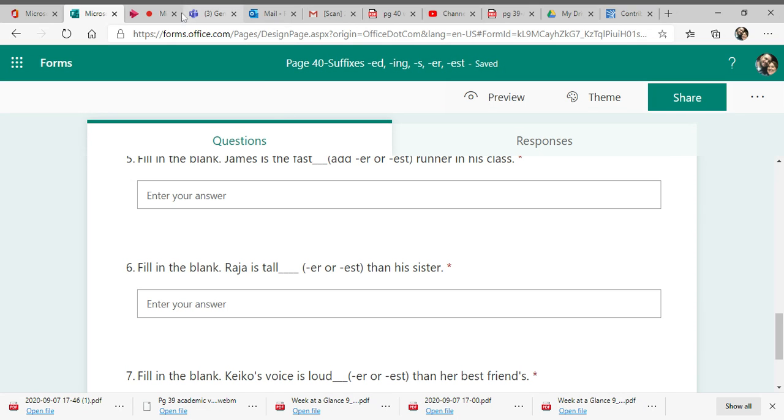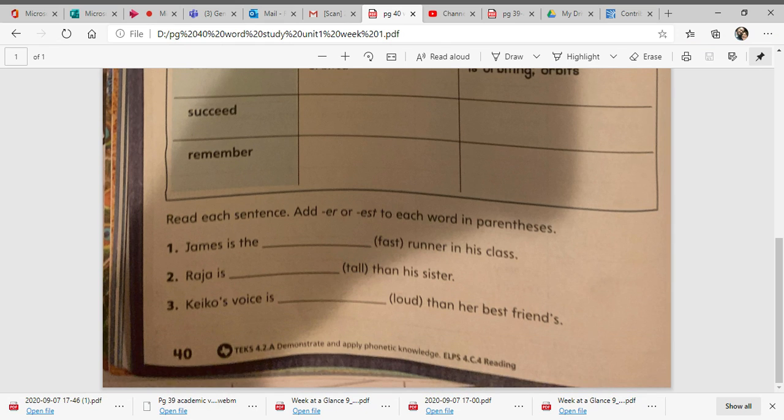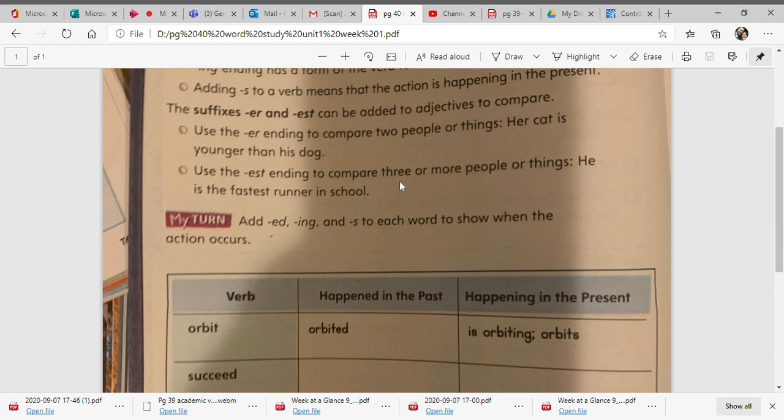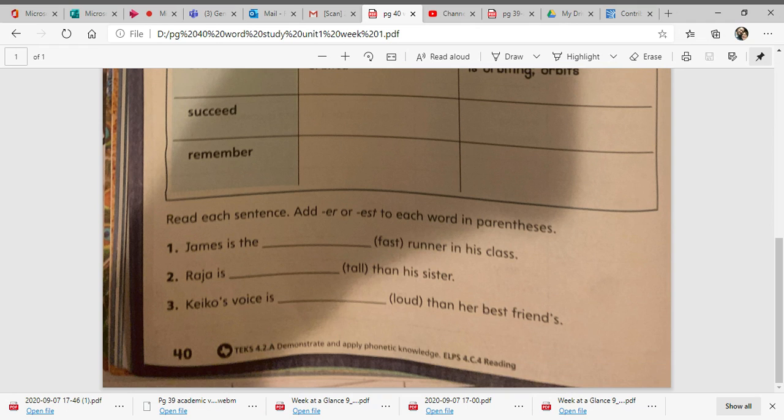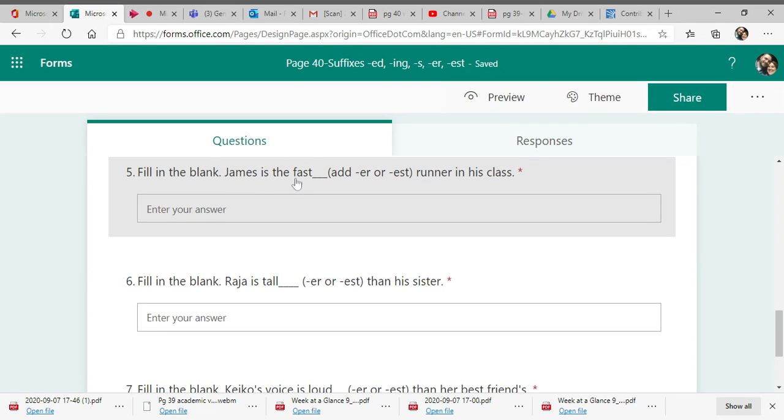All right, for five, six, and seven, go back to your page 40, and you see 1, 2, and 3. You're going to add either ER or EST. James is the blank runner in his class. You have the word fast, so it either needs to be faster or fastest. If you remember from when we went up here, the EST is three or more people. So what would be fastest? So go to your form and look at number five and it says James is the fast runner in his class. So you would type fastest in your answer here.